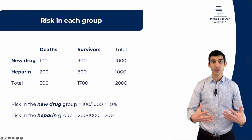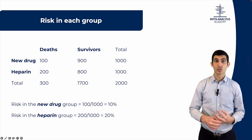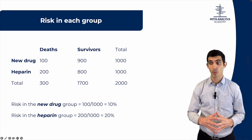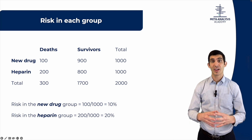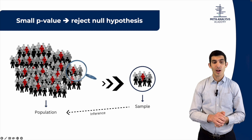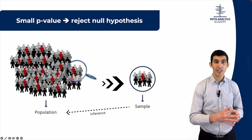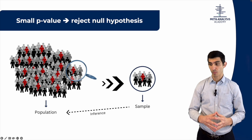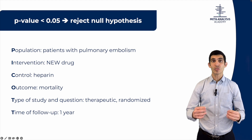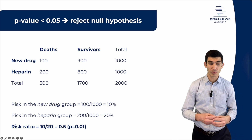The risk of dying in the new drug group is 10 percent — 100 of 1,000 patients died. In the heparin group, the risk is 20 percent — 200 of 1,000 patients died. So that's a dramatic difference: one group 10 percent died and the other group 20 percent died. The question is, can we conclusively say that in the target population of all patients with pulmonary embolism, this new drug is in fact better than heparin and really does decrease mortality? So with that in mind, if we get a small p-value less than 0.05, we would reject the null hypothesis that there's no difference between both groups.